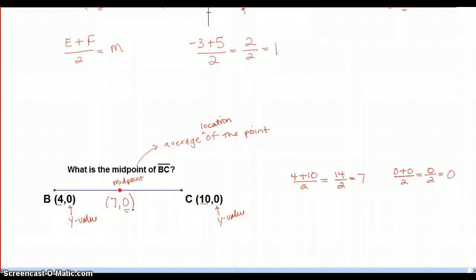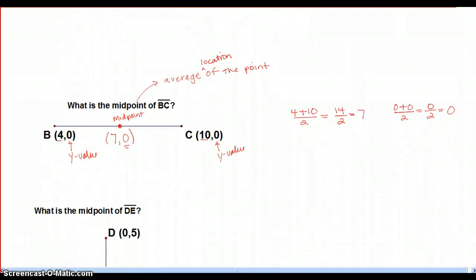So, whenever you find midpoint, you're just averaging the two numbers. Okay, let's look at our third example.